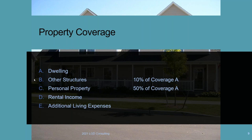Coverage B is other structures — the fence, a separate garage, a shed, a gazebo, a pool house. You may also see it called 'separate structures.' The standard limit is automatically 10% of Coverage A. So if Coverage A is $600,000, you get $60,000 for other structures. The dwelling and other structures are real property — structures on the premises.